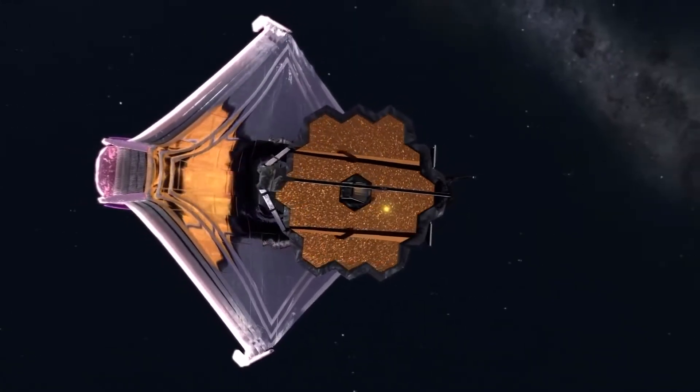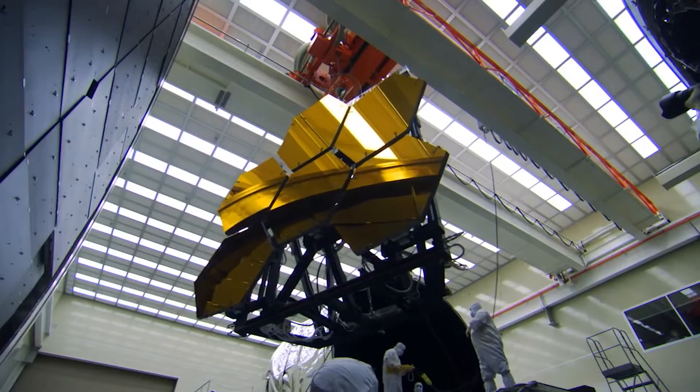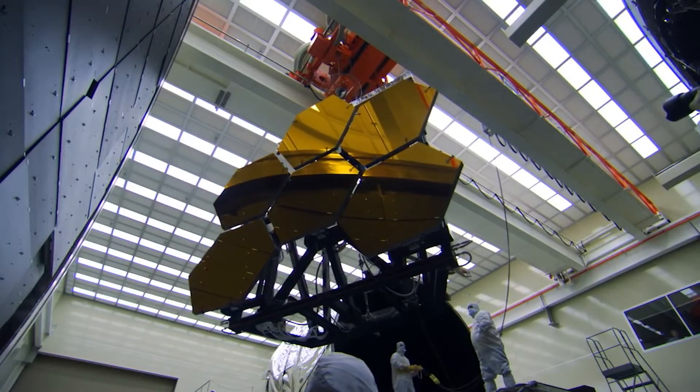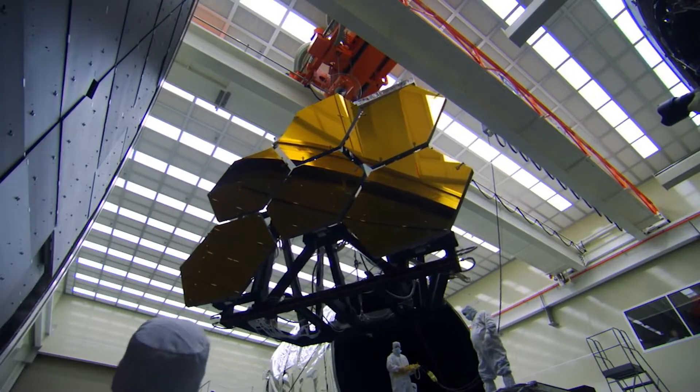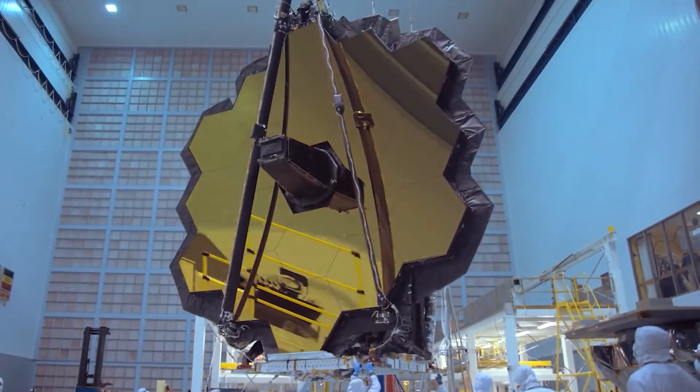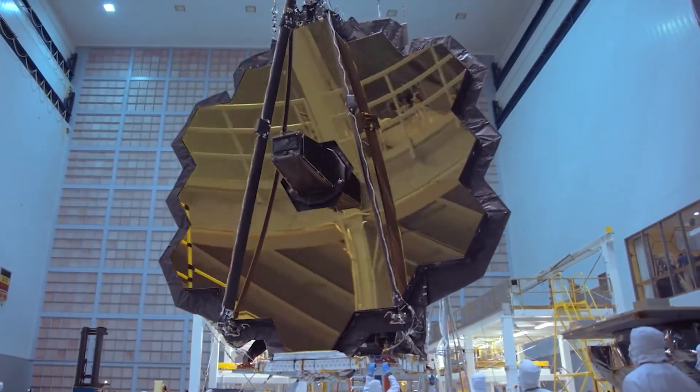Each hexagonal section has seven actuations and may be tilted, moved, rotated, and distorted to guarantee that they work as one perfect parabolic surface.